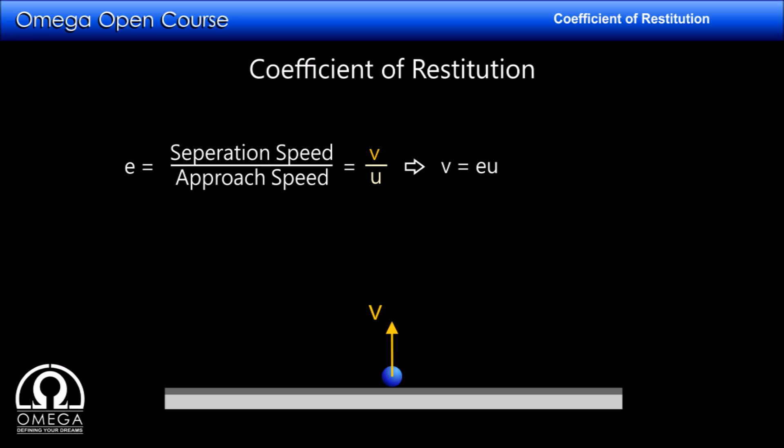In other words, if the coefficient of restitution between the floor and the ball is e and the ball hits the floor normally with speed u, the speed with which it will bounce is e times u. In the case of a perfectly elastic collision, it will bounce with the same speed it collided with the floor.